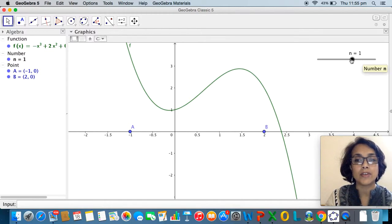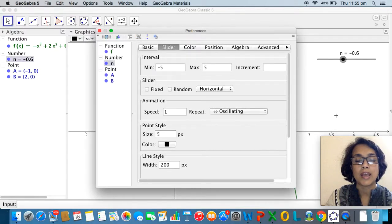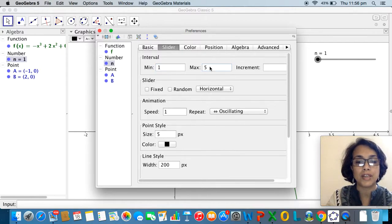The number of rectangles cannot be negative, so right now the n values are varying from minus 5 to 5. I'm going to adjust by right clicking on the slider going to object properties and allowing the interval values of n to range from 1 to 50 with an increment of 1.